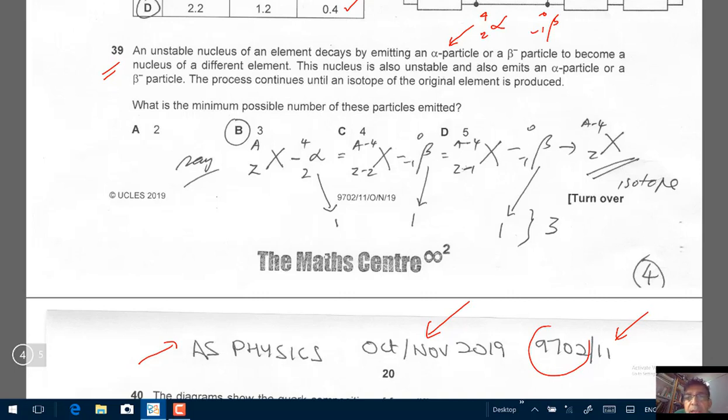This nucleus is also unstable and also emits an alpha particle or a beta minus particle. The process continues until an isotope of the original element is produced.